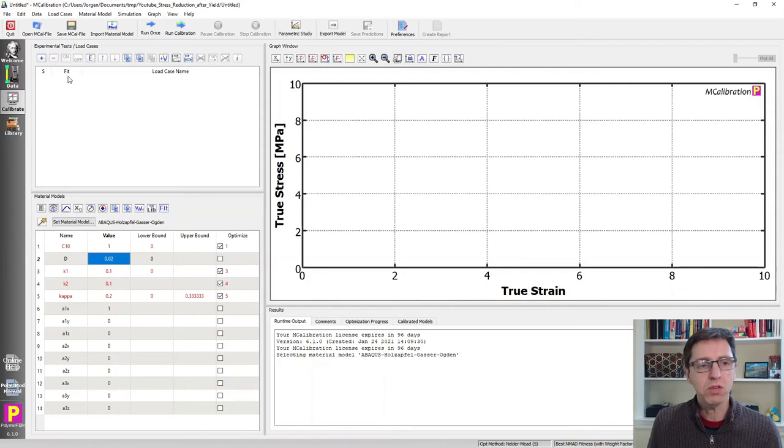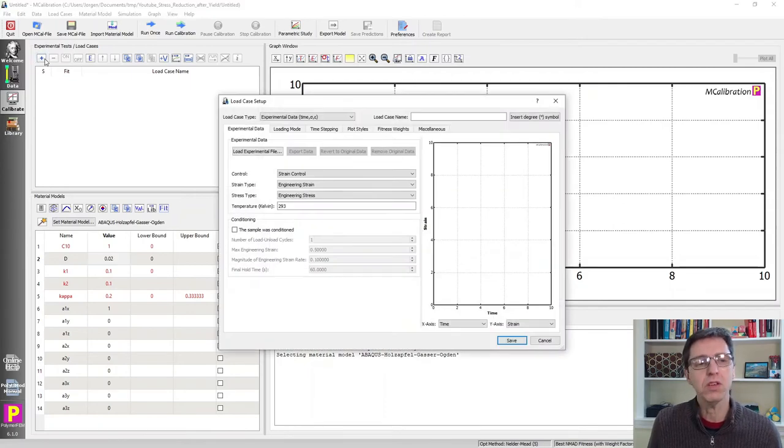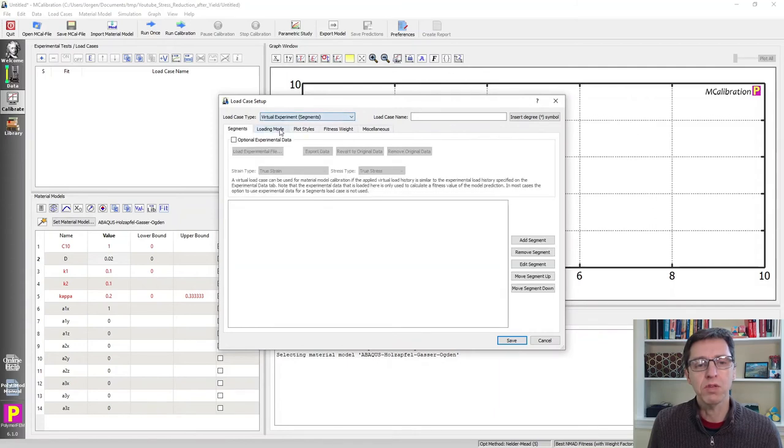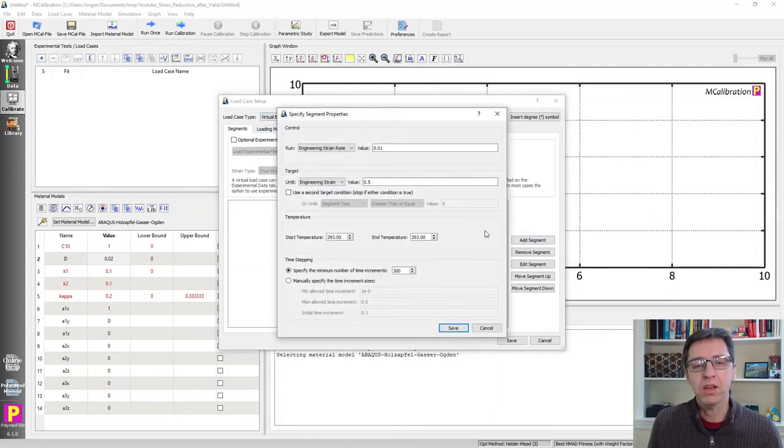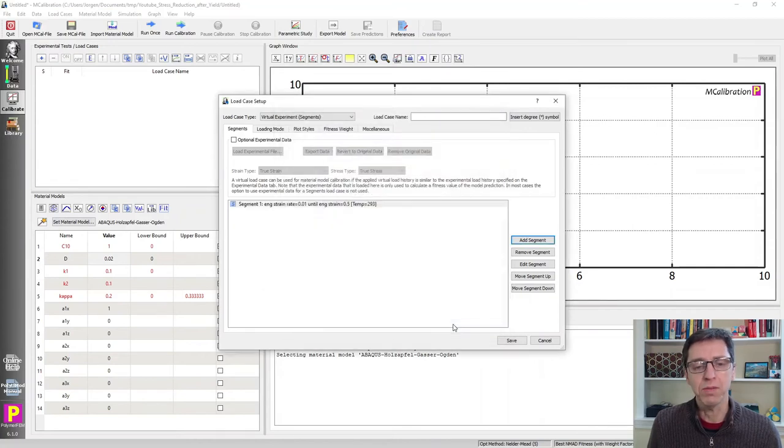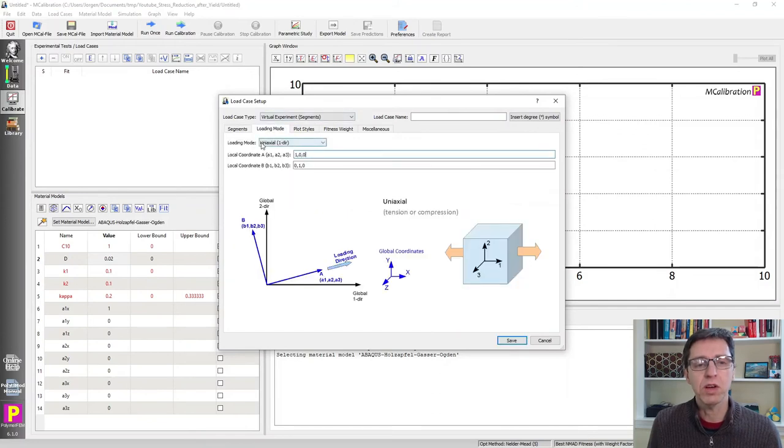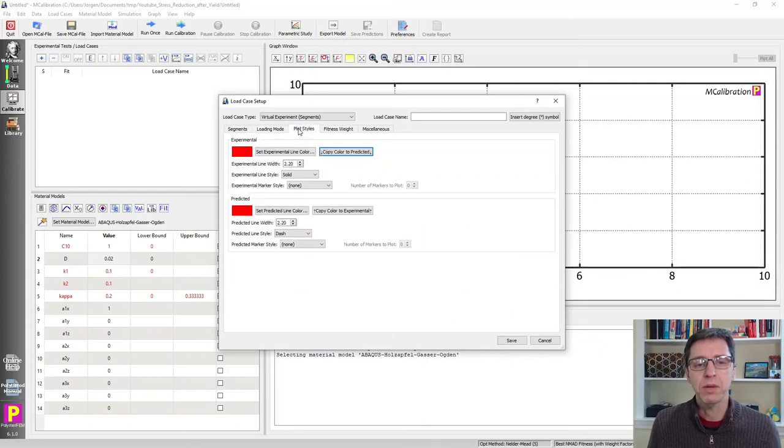So to use this, let's try it out. I'm going to create a virtual test case using MCalibration. So I'm going to set the type to virtual. I'm going to add a uniaxial tension with a given strain rate to an engineering strain of 0.5. And then I'm going to make sure this is now tension in the one direction. So that's the first case. I'm going to pick a good color for this. I will make it red and solid.